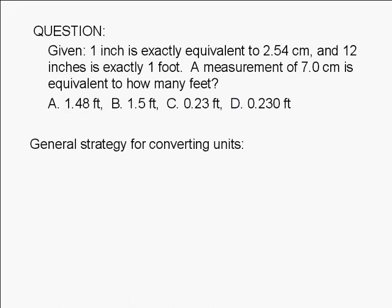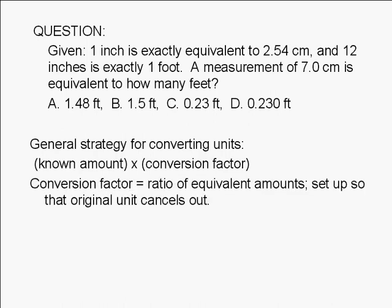The general strategy for converting units is to multiply the known amount by a conversion factor. The conversion factor is just the ratio of equivalent amounts. We need to set up the conversion factor so that the original unit cancels out.